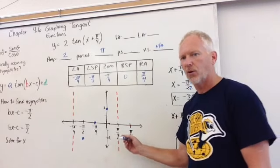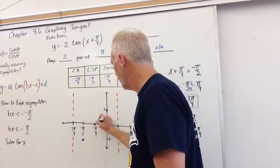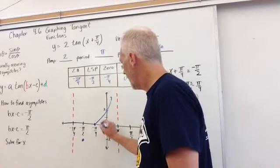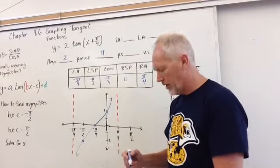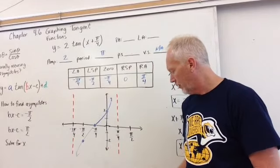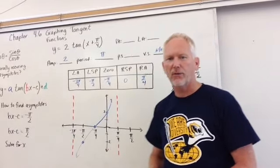So then we can just create the drawing. And the graph will go through there. And it will go through there like that. So that is the tangent curve with a phase shift.